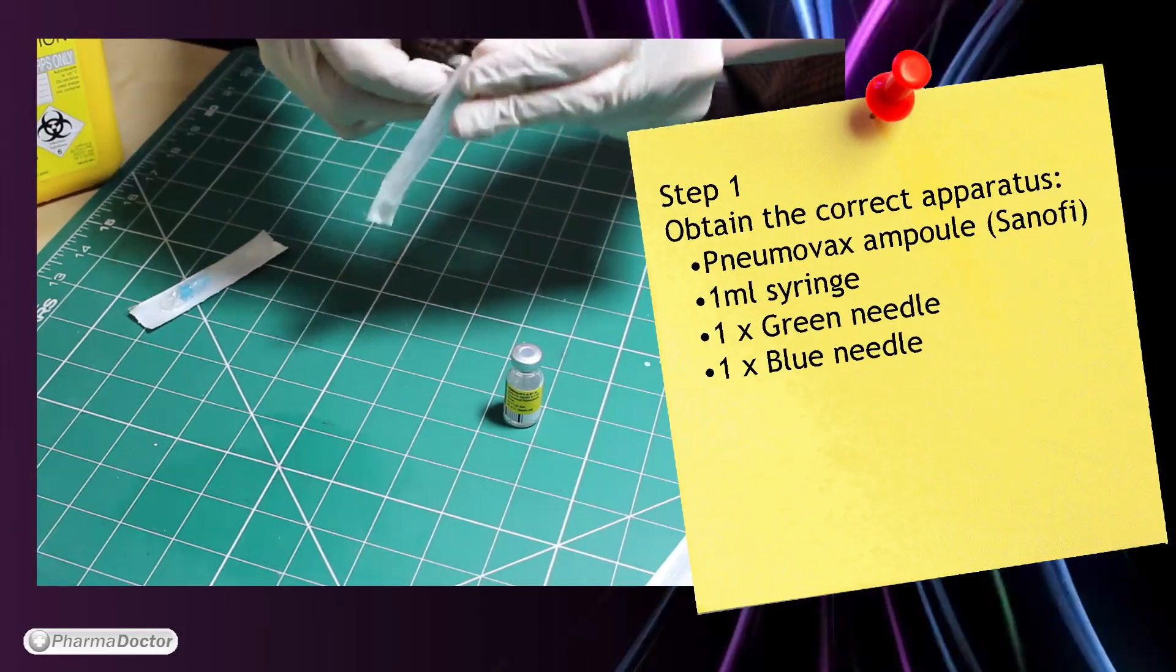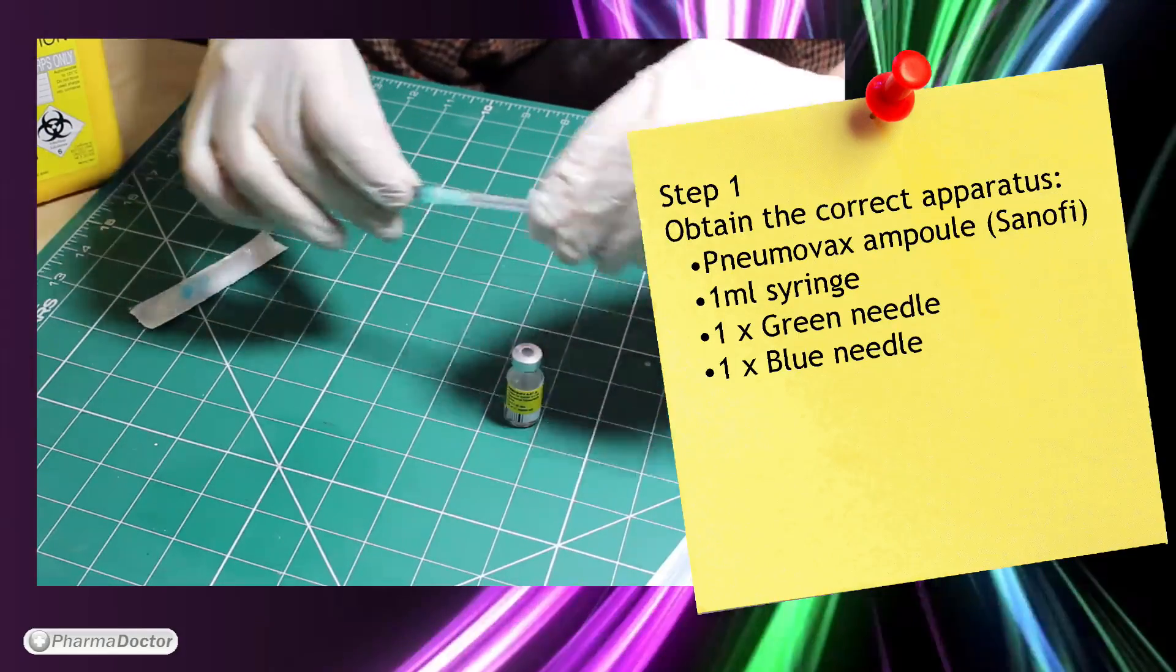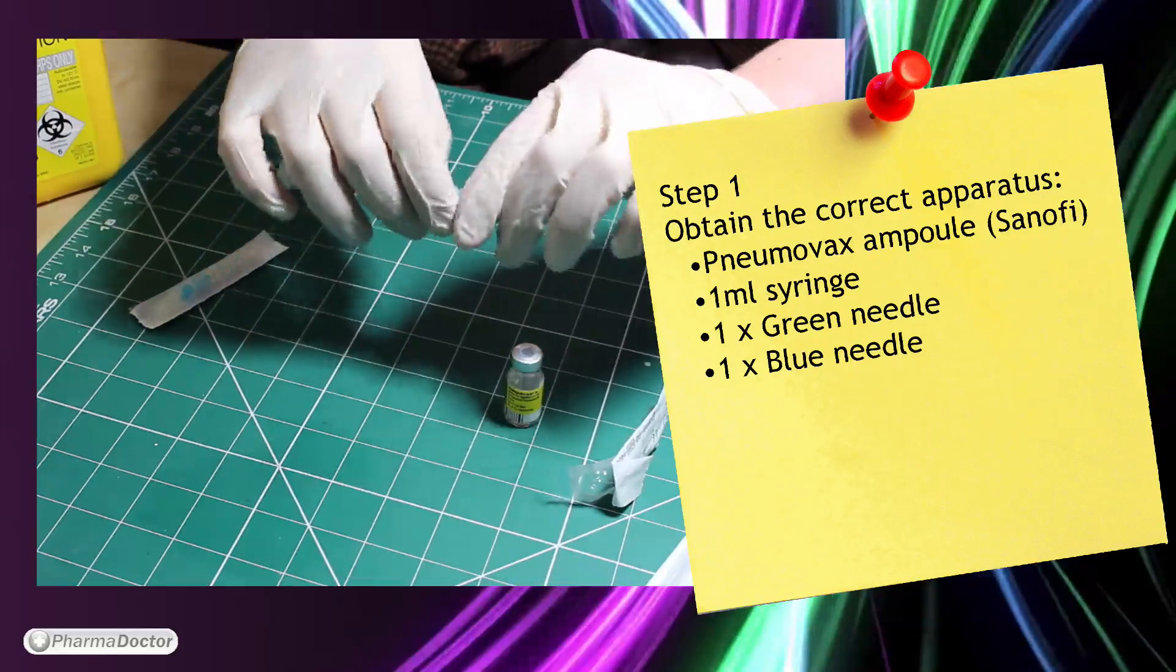Step 1. Obtain the correct apparatus. Munovax ampules from Sanofi, 1 ml syringe, 1 green needle and 1 blue needle.